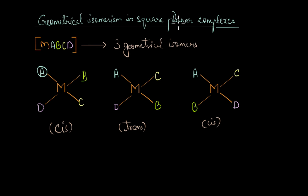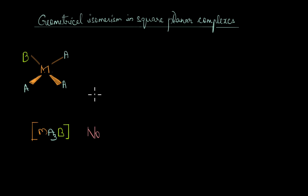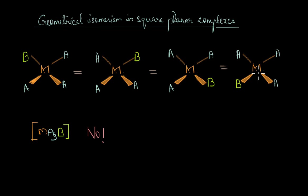Let's look at one more type of square planar complex: MA3B. This square planar complex does not exhibit geometrical isomerism. When you rearrange the ligands in this complex, the different arrangements you get can all be obtained by simply rotating the complex. That means there is no scope for a cis or trans isomer in this type of complex.